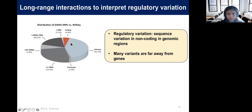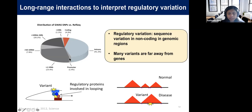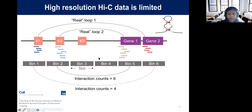The last part of my talk concerns regulatory variation. Much of the genetic variation we see in the genome is far from genes and non-coding. Interpreting this non-coding variation — what genes it affects, what pathways it impacts — is a major challenge. One approach is to use long-range gene regulation: a variant in a regulatory element like an enhancer could impact gene expression by perturbing a looping interaction or disrupting topologically associated domains.